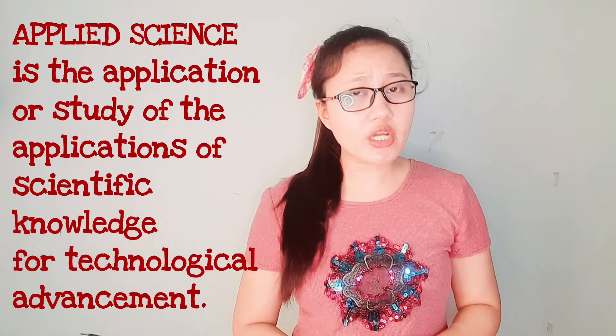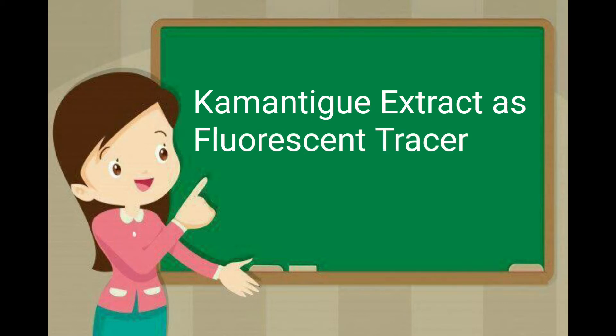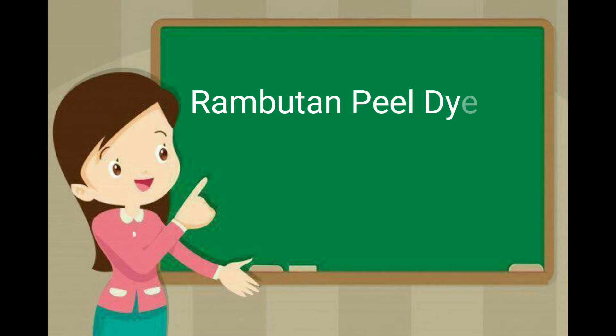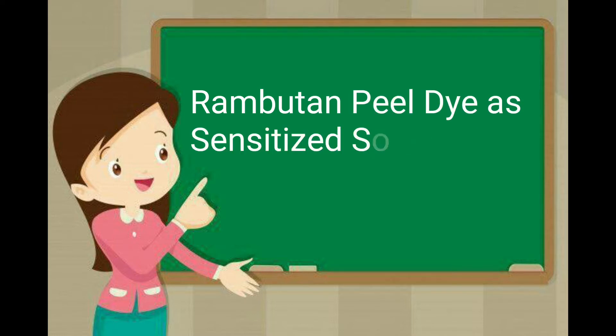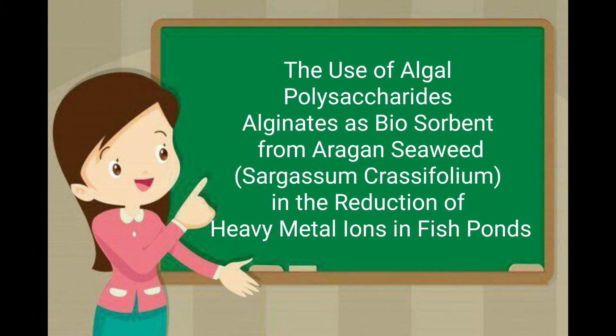Number two, we have applied science. Applied science is the study of applications of scientific knowledge for technological advancement. The science concepts we know can be used to create a product or project related to the advancement of technology. Examples include: kamantigay extract as fluorescent tracer; rambutan peel dye as sensitized solar cell; and the use of algal polysaccharides (alginates) as biosorbent from Aragon seaweeds in the reduction of heavy metal ions in fish ponds.